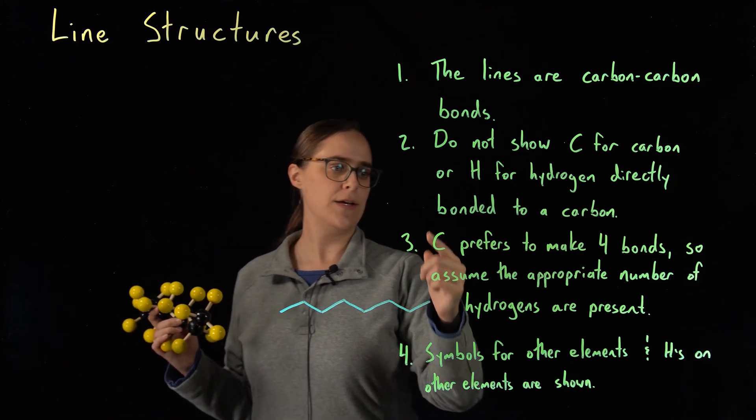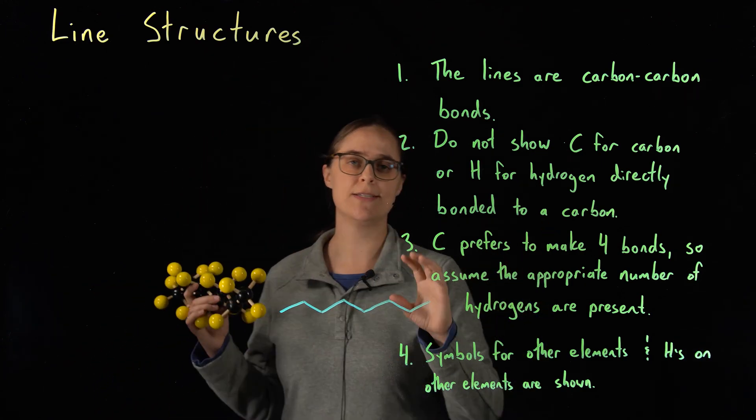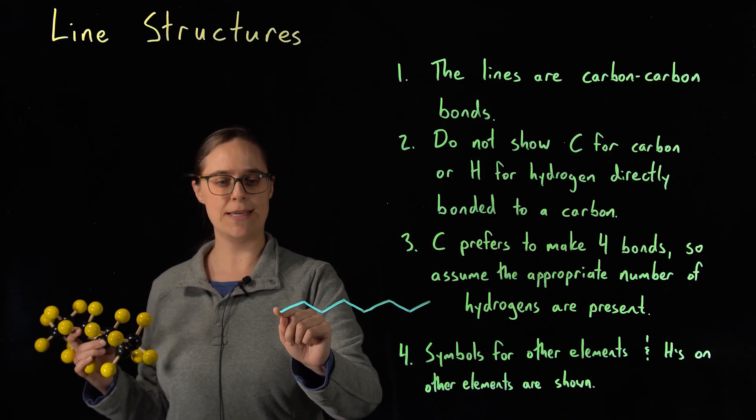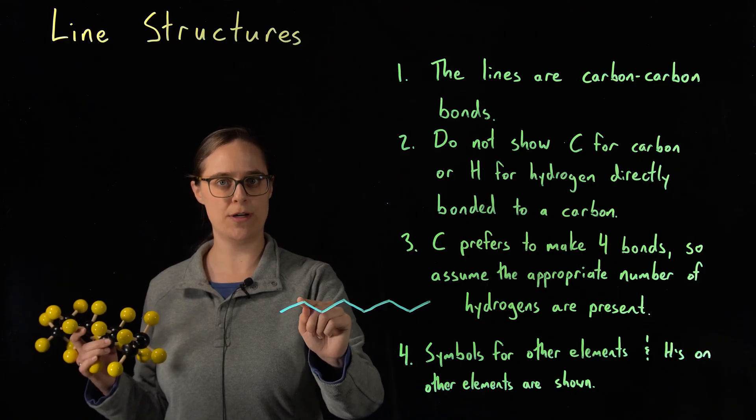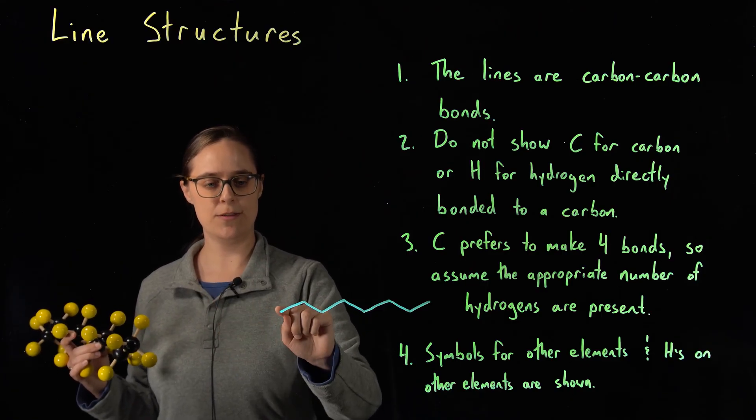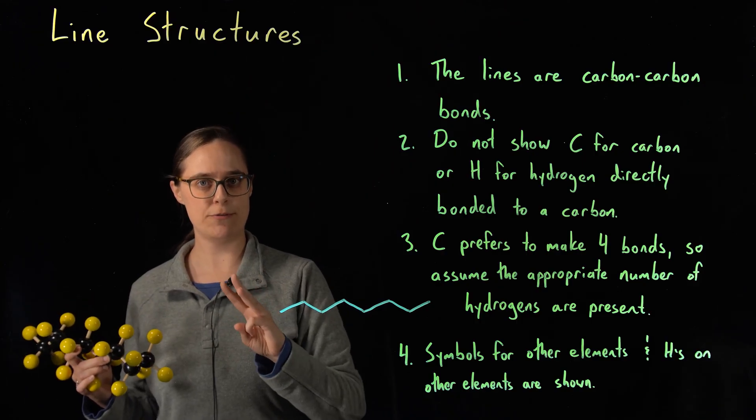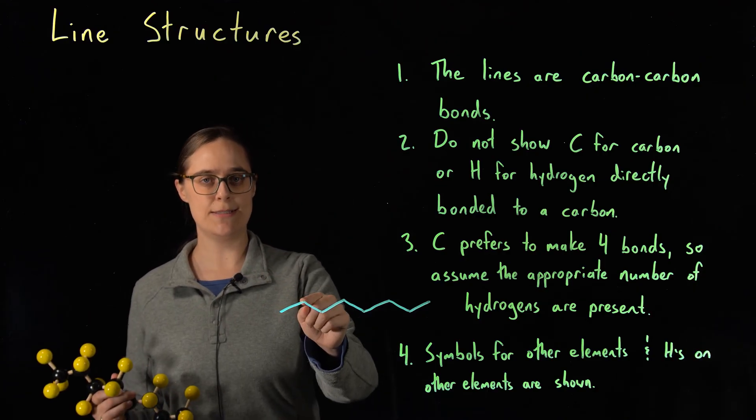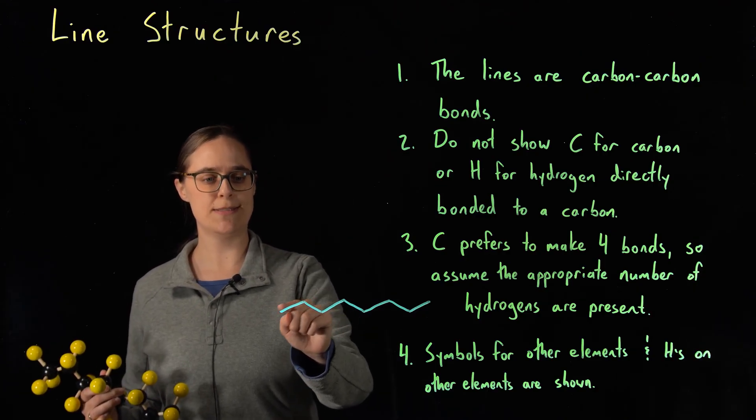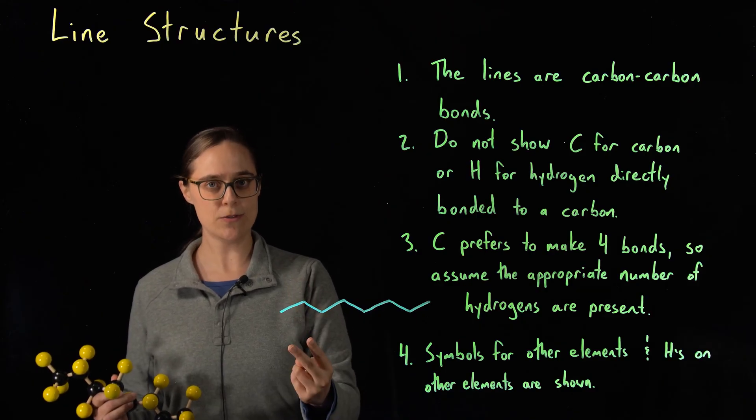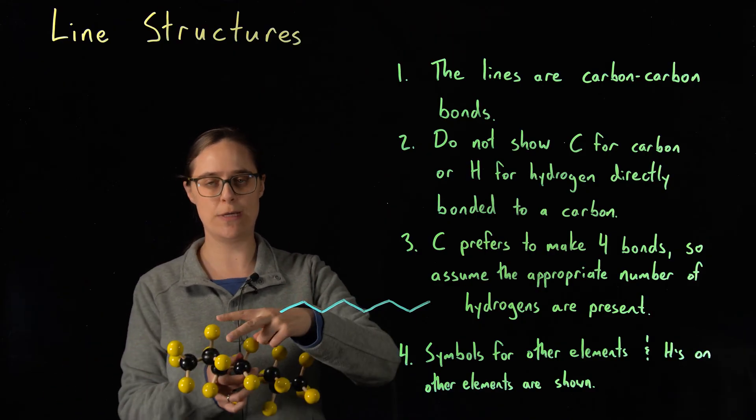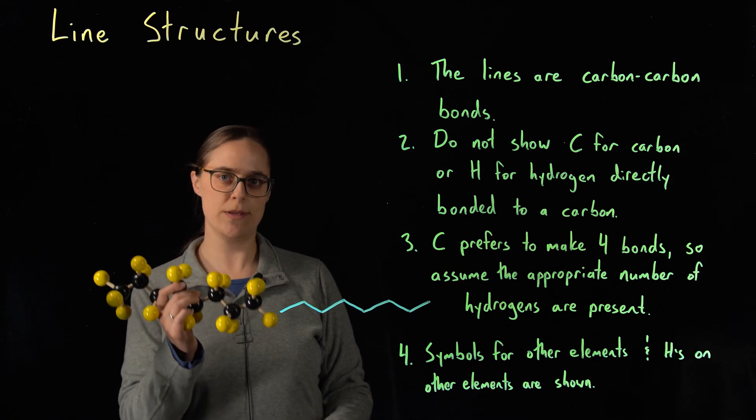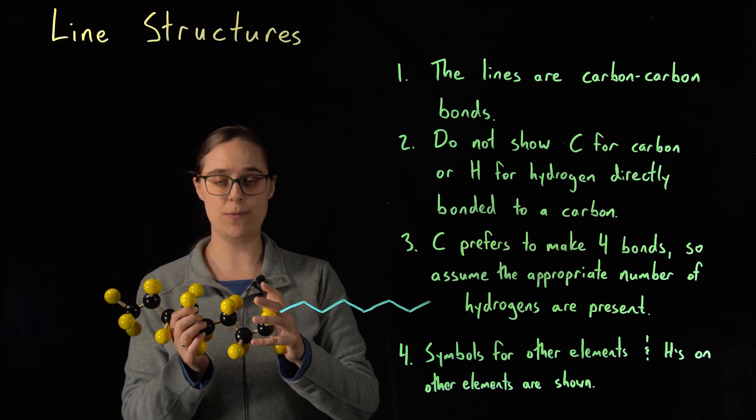Rule three, carbon prefers to make four bonds, so assume the appropriate number of hydrogens are present. So this very first carbon, you are seeing a single bond to another carbon, but that carbon has four bonds. The drawing is only showing one. Those other three bonds are bonds to hydrogens. You assume the appropriate number of hydrogens are present to meet the octet rule.